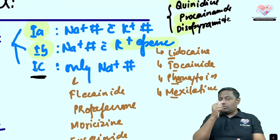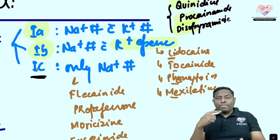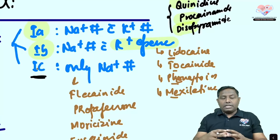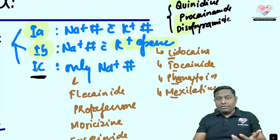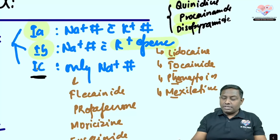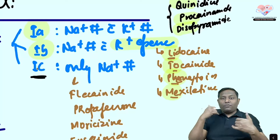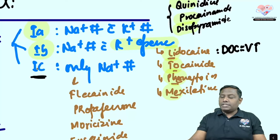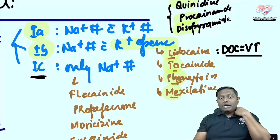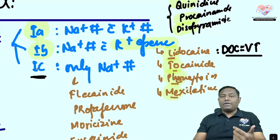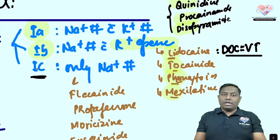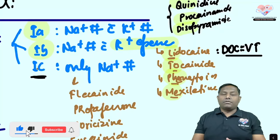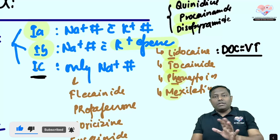Lidocaine is the drug of choice for ventricular tachycardia and ventricular arrhythmias. If lidocaine is unavailable, amiodarone or magnesium can be used, and beta blockers are a further option. Flecainide (class 1C) is the correct answer for this question as it acts purely by sodium channel blockade.